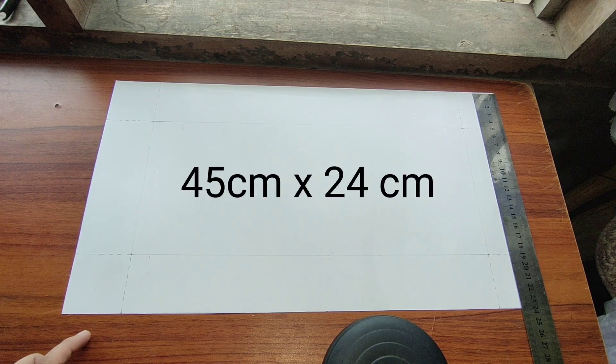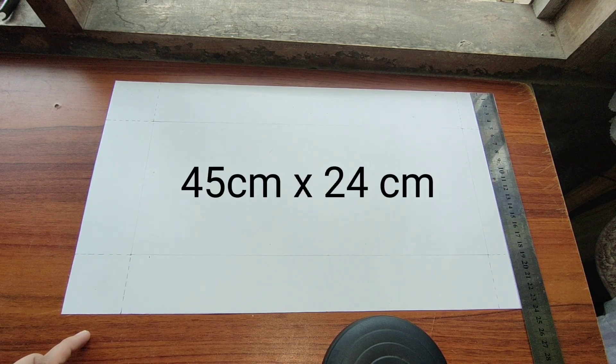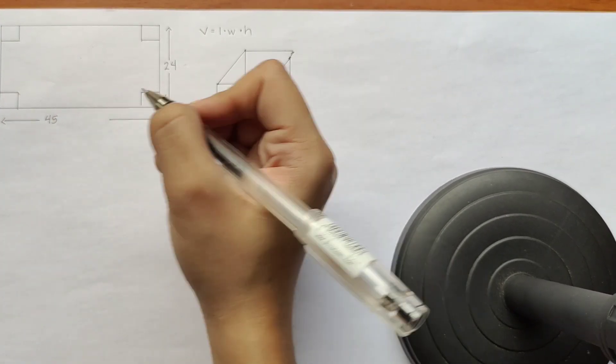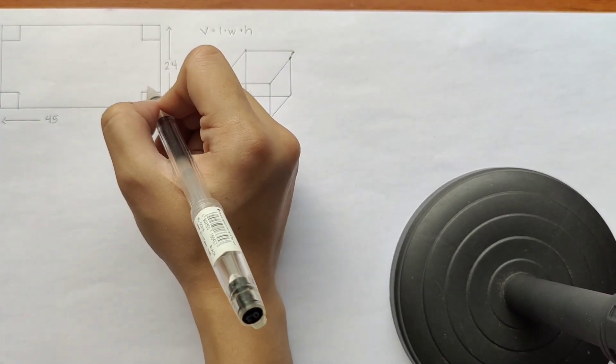45cm x 24cm. So let x be the height. And we'll be cutting x right here.